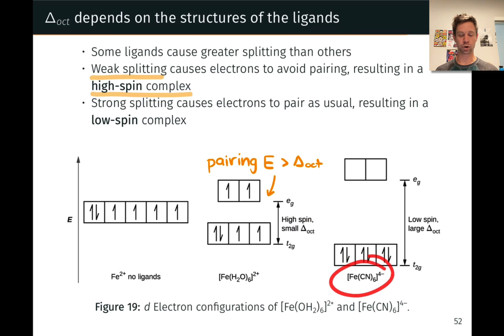Cyanide is what we'll call a strong field ligand that causes large crystal field splitting, all other things being equal. So this gap is much larger, and now in this case delta oct is greater than the pairing energy. And so now the energetic penalty associated with electron pairing is actually less than this gap.